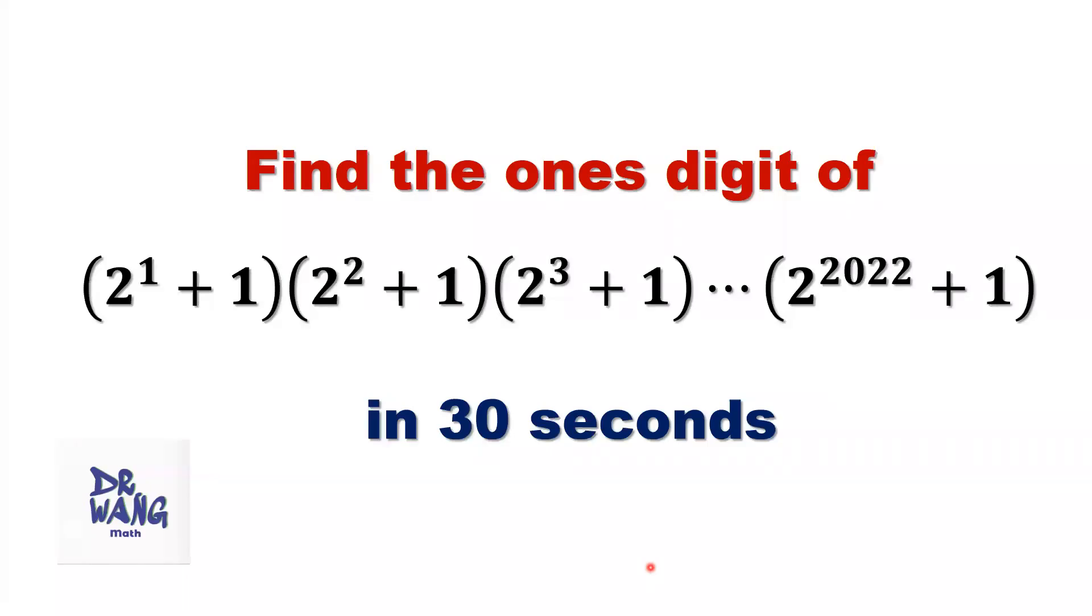Hello everyone, I'm Dr. N. Here is the question. Find the one's digit of (2^1 + 1)(2^2 + 1)(2^3 + 1) until (2^2022 + 1).